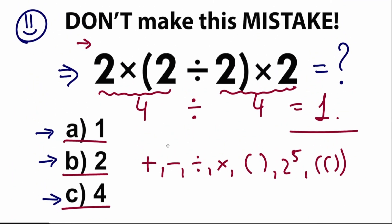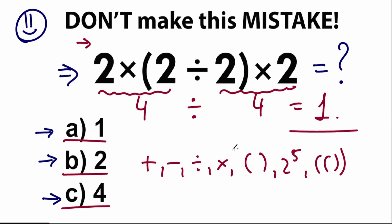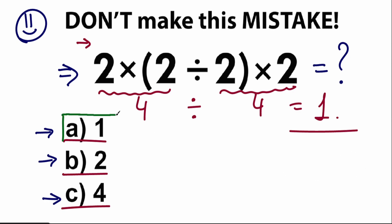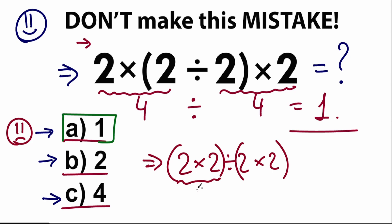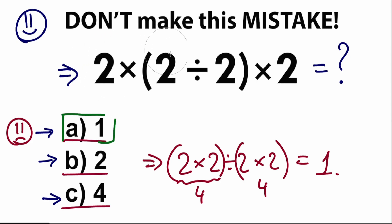In the beginning we said maybe the answer is 1 by going left to right without respecting parentheses. When you choose answer 1, you need to review your basic math, because that is the wrong approach. Answer 1 would be correct if we had parentheses placed differently — for example 2 times 2 divided by (2 times 2), where both products have parentheses, giving 4 divided by 4 equals 1. But in our question the parentheses are in a specific place, so the correct approach is different.